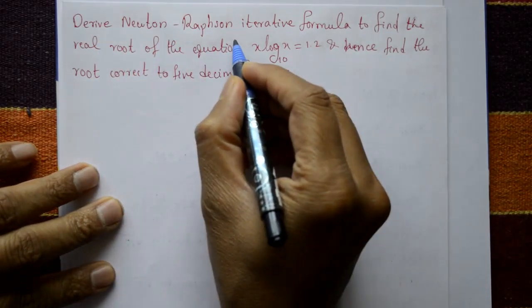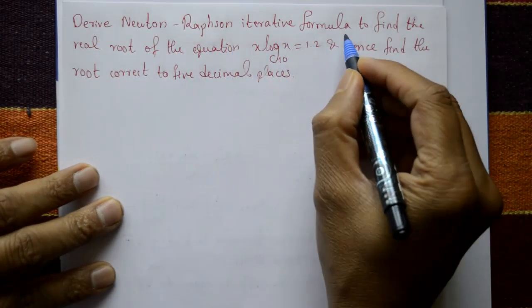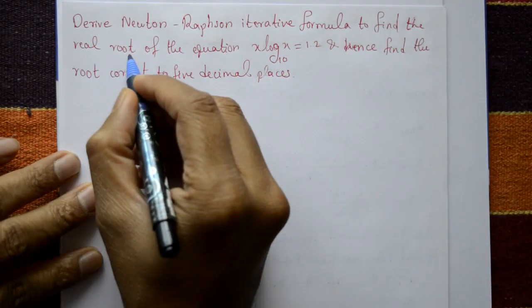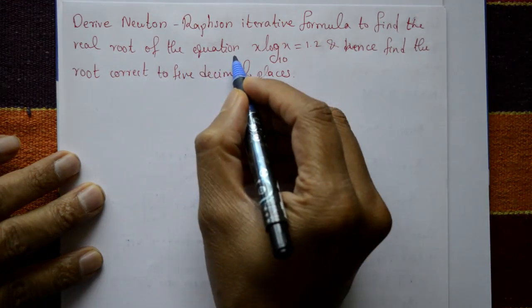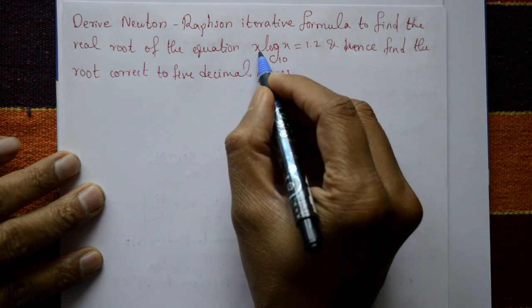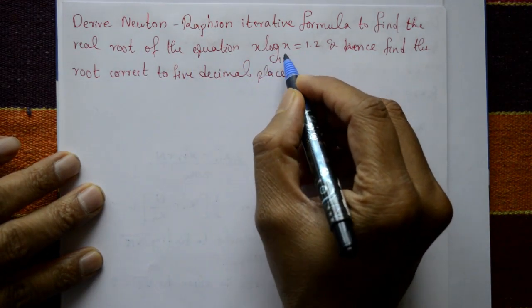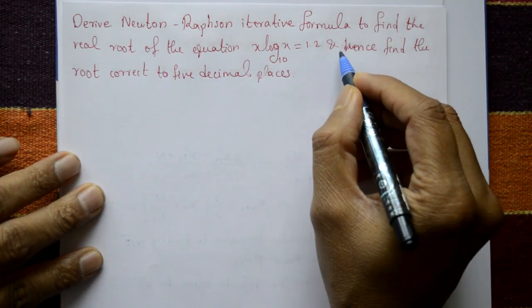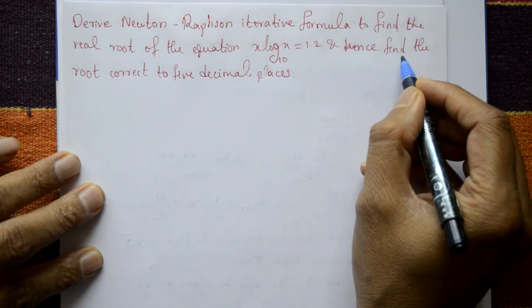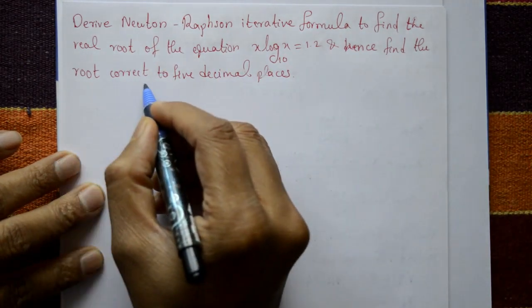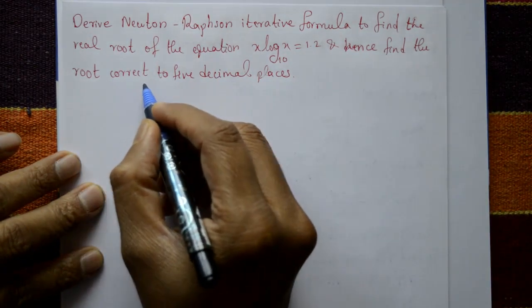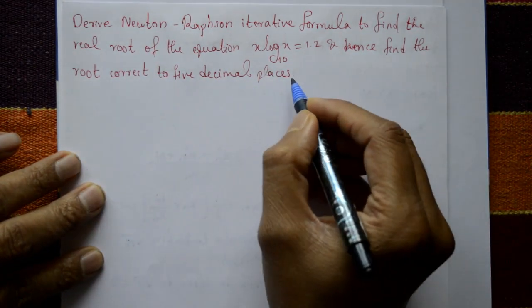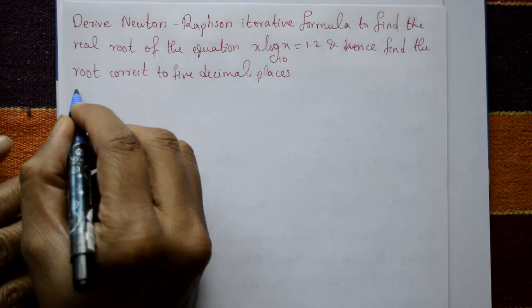Derive the Newton-Raphson iterative formula to find the real root of the equation x·log₁₀(x) = 1.2, and hence find the root correct to 5 decimal places.